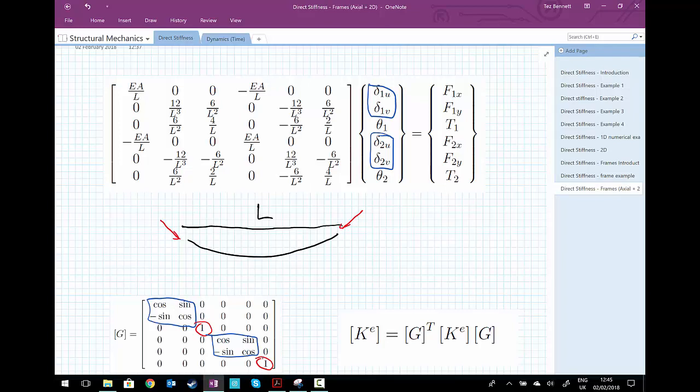And like we did with the truss analyses, to convert our one-dimensional stiffness matrix to two dimensions, we need to apply the G-transposed transformation matrix transpose as a pre-multiplier and the transformation matrix as a post-multiplier to get our stiffness matrix in 2D from our stiffness matrix in one dimension.